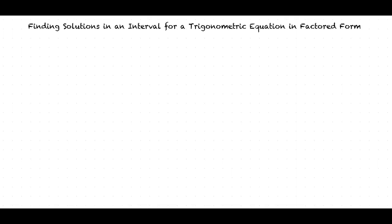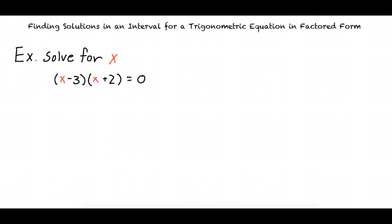This video will cover the topic of finding solutions in an interval for a trigonometric equation in factored form. When it comes to solving problems of this type, it is important to remember that to solve an equation in factored form, such as (x minus 3) times (x plus 2) equals 0, we find the values of x that make either factor equal to 0. So when finding solutions in an interval for a trigonometric equation in factored form, our factors will include trigonometric functions.